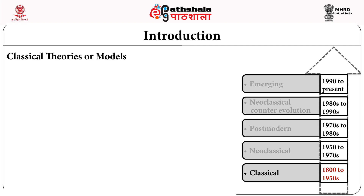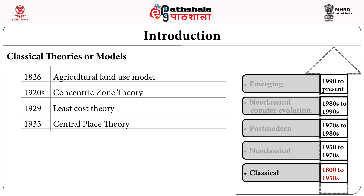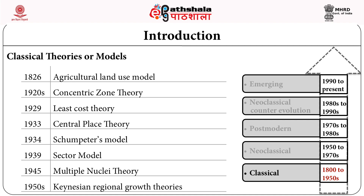Among the classical theories, we have the agricultural land use model in 1826, the concentric zone theory in the 1920s, the least cost theory in 1929, the central place theory in 1933, Schumpeter's model in 1934, the sector model in 1939, the multiple nuclei theory in 1945, and Keynesian regional growth theories in the 1950s.